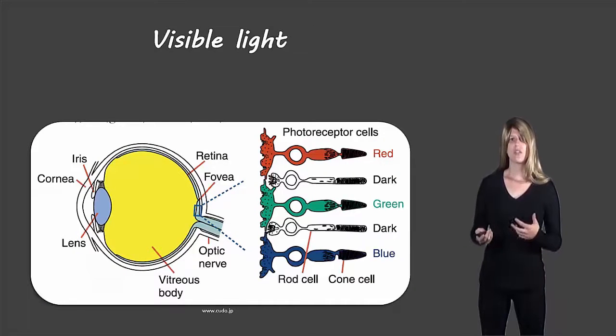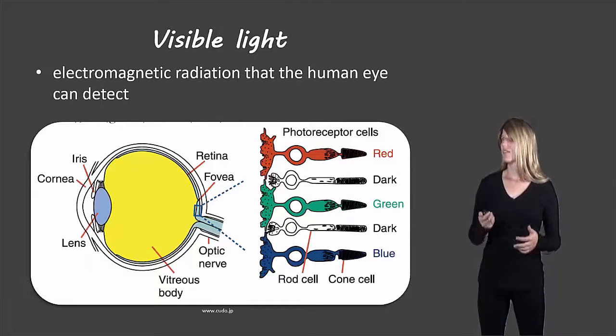So let's take a closer look at the visible light. This is electromagnetic radiation that a human eye can detect. So there are two different types of cells in our eye that help us detect visible light. There are rod cells and cone cells.